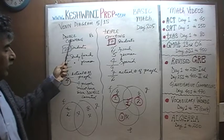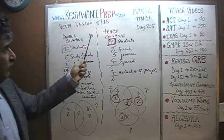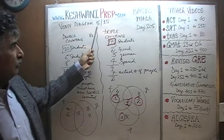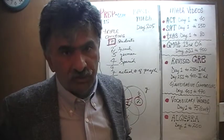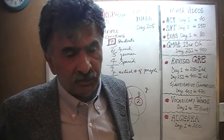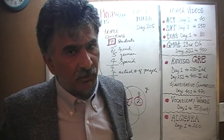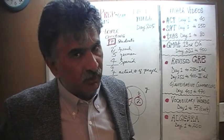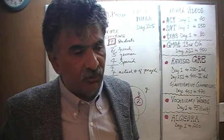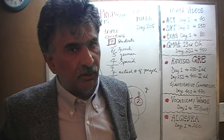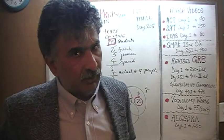Yesterday in the scenario of double counting, we had an example with 10 students. By the way, if you have not watched yesterday's video — day number 4 in the series of 15, day number 204 — it is absolutely essential that you watch this series in its proper order. Otherwise it becomes more difficult to follow. I take it for granted that you have watched yesterday's videos and completely understand the concepts of double counting and triple counting. I'm just doing a quick revision.